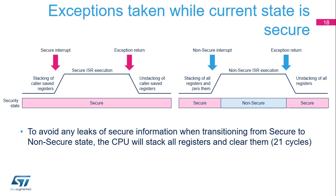When an interrupt is taken while the current security state is secure and the interrupt source is non-secure, a risk of register content leakage exists because the general-purpose registers contain secure data. Therefore, the microcode in charge of register stacking saves all the registers to the secure stack and then writes zero to all of them prior to starting the execution of the non-secure ISR. 21 clock cycles are needed to achieve this register stacking. Unstacking is performed from the secure stack and restores the contents of all the general-purpose registers.